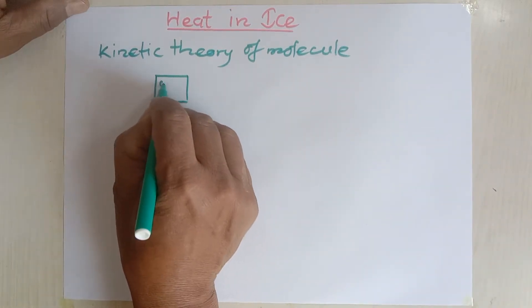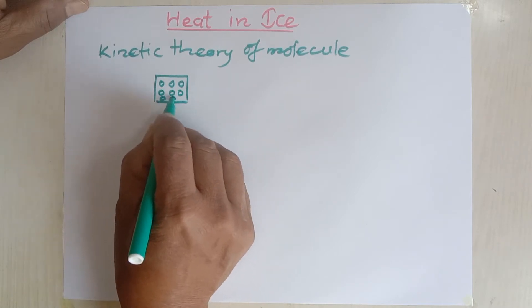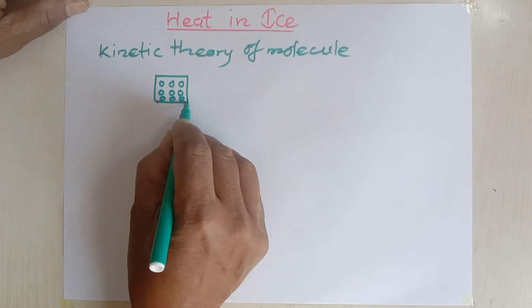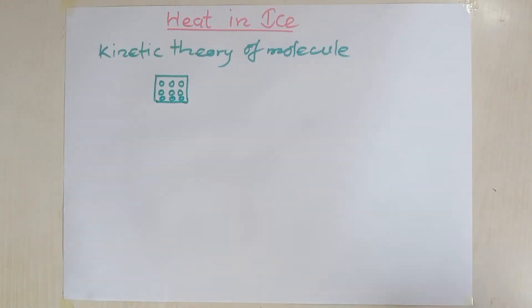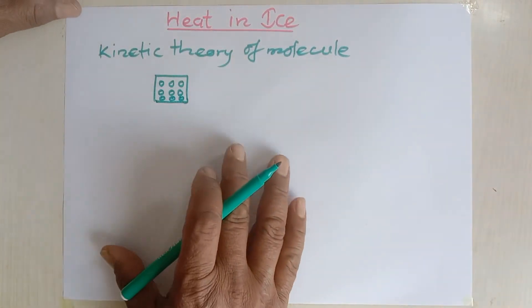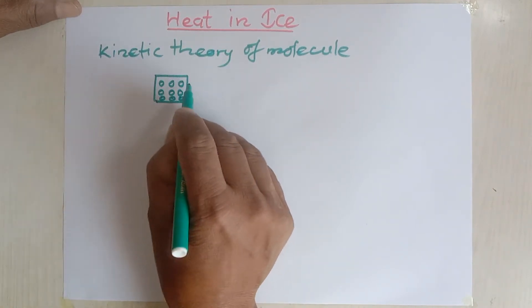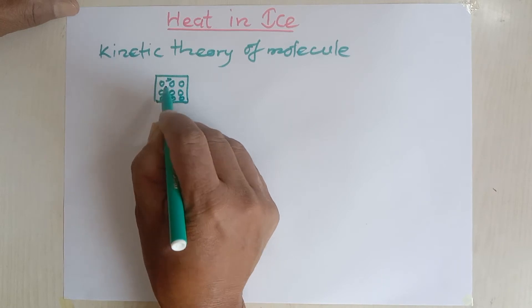And these tiny particles are named as molecules. They cannot be seen with naked eye, whether it is solid, liquid, or gas. And according to this kinetic theory of molecule, all these minute molecules are vibrating randomly.